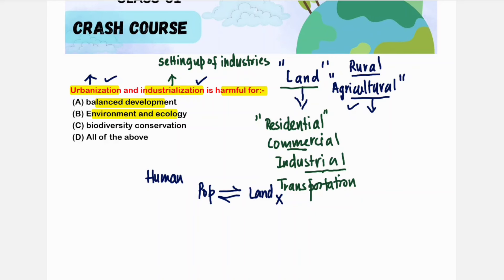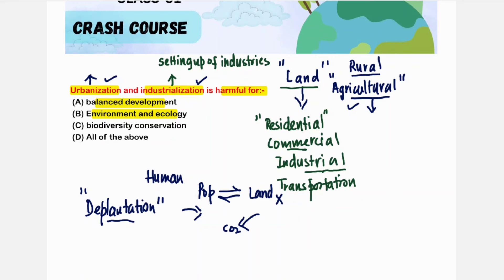Second, urbanization causes deforestation — trees that were useful for maintaining the balance of oxygen and carbon dioxide are removed. Industrialization also causes harmful release of chemicals into the environment, disturbing the ecology and interaction of living species.